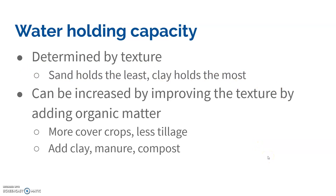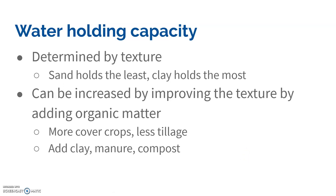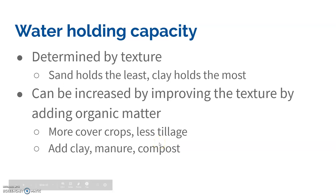Water holding capacity is determined by texture — sand holds the least, clay holds the most. We can change the texture to improve water holding capacity. It takes a long time to change soil naturally, so we can add organic matter by planting cover crops or shrubs, and reduce tillage. Tillage is when the soil is overturned to loosen and aerate it, but it removes organic matter and vegetation. We can also add clay, manure, and compost, all of which add organic matter and allow soil to retain more water.